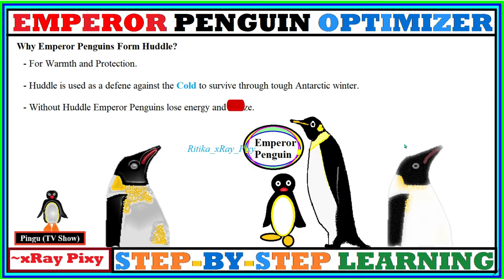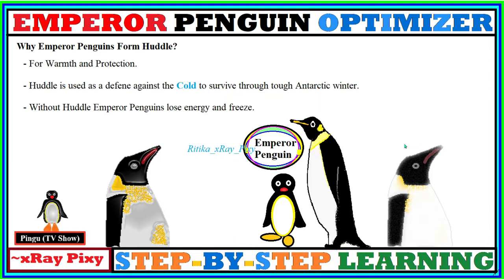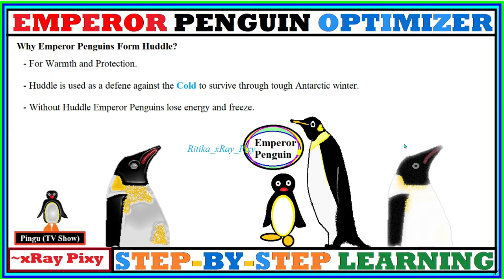Now we will understand why emperor penguins form a huddle. The emperor penguin is the only species that huddles to survive during the Antarctic winter. Huddling is used as a defense against the cold. Without huddling, emperor penguins lose their energy and freeze. So huddling is used to conserve energy and maximize temperature so they can survive the tough Antarctic winter. In this algorithm, each emperor penguin has an equal opportunity to benefit from the warmth of the huddle.